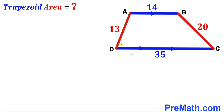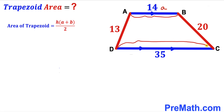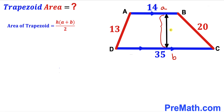Let's get started. Since we are interested in calculating the area of trapezoid ABCD, let's recall the area of a trapezoid formula: Area equals height h times the sum of bases A and B, all over 2. Here base A is AB and base B is CD. We know base A is 14 and base B is 35; however, the height h is unknown.